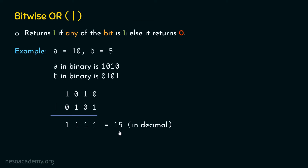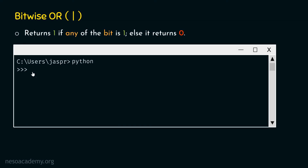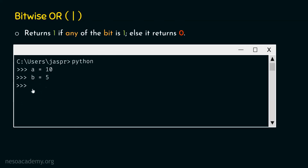We can verify this as well. In the command prompt, type A equal to 10 and hit enter, then B equal to 5 and hit enter. Then type A | B and hit enter — we will get 15 as the result. To see the binary equivalent, provide A | B to the bin() function: type bin(A | B) and hit enter. We get 0b1111. The prefix 0b tells us this is a binary number, and 1111 is the binary equivalent of 15.